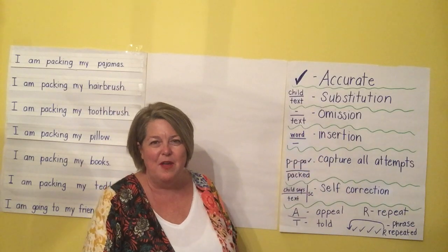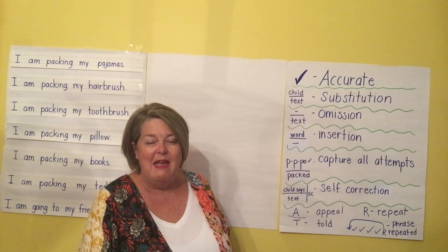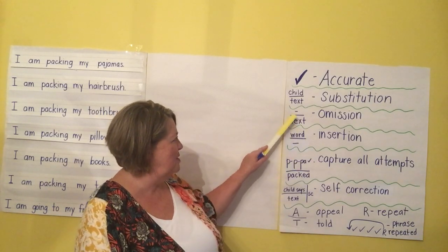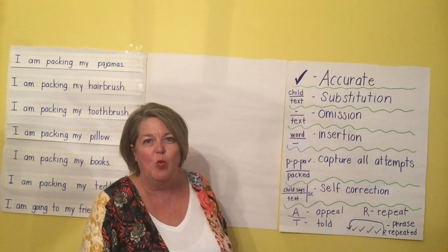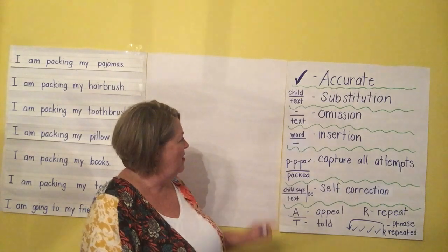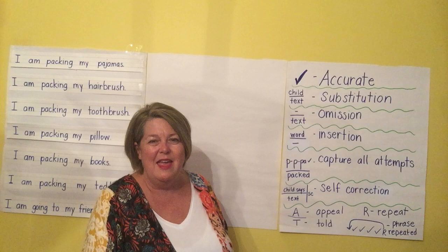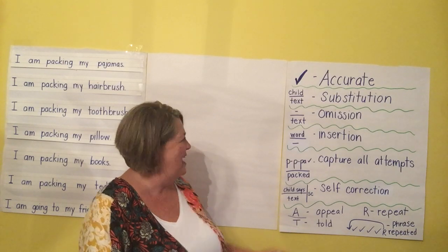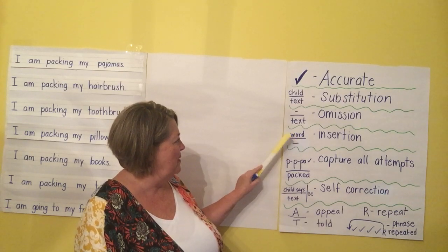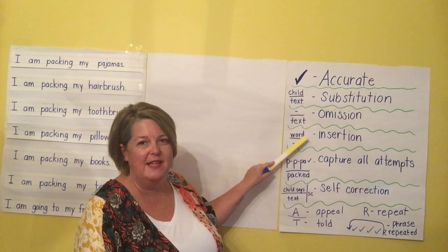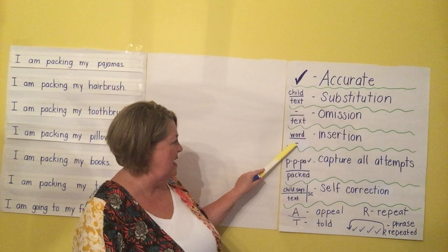The next type of error is an omission — that means a word was simply omitted and the child skipped over it for whatever reason. You would put a dash to indicate that the word was not said. Another type of error that's almost like the opposite of an omission is inserting a word — that's called an insertion, and it's also indicated with a dash. You write the word that they insert, what they said, and then to indicate that there was no word there, you put a dash.